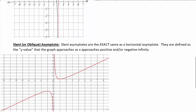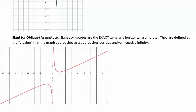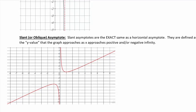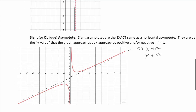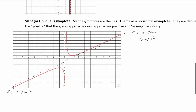A slant asymptote or oblique asymptote is the same thing as a horizontal asymptote — the only difference is it's not horizontal, it's a slanted line. As x goes towards infinity, notice the graph is going this way, and on the other side as x approaches negative infinity, the graph is going down. So as x approaches infinity, y is approaching infinity, and as x approaches negative infinity, y is approaching negative infinity.